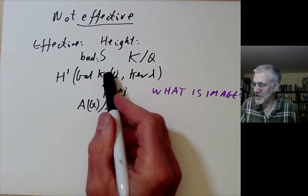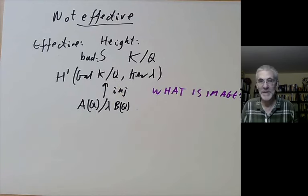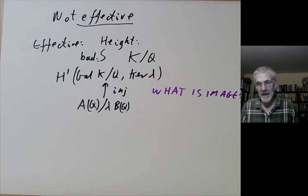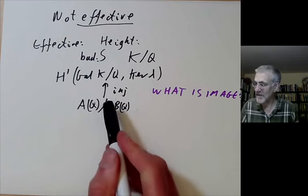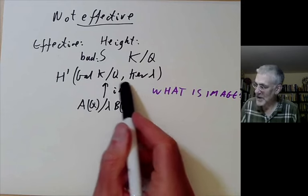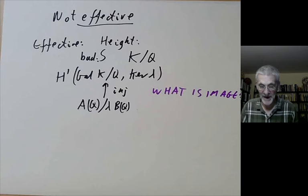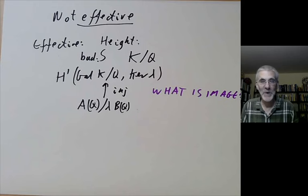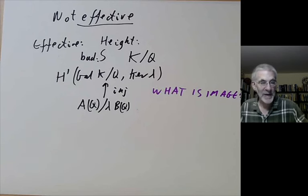The obstruction to this is a group called the Tate-Shafarevich group, which is notoriously difficult to calculate. It's believed to be finite, or conjectured to be finite, and seems to be finite in all cases we've been able to calculate it. If it's finite, then we can calculate the image of this group in an effective way. If it turns out to be infinite for some elliptic curve, then we'd be kind of stuck. Actually, this would be really interesting and really annoying, and people would have to completely rethink everything they know about elliptic curves.